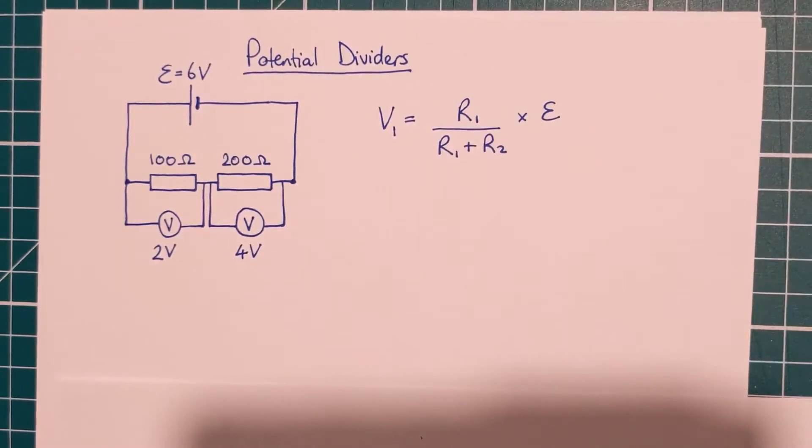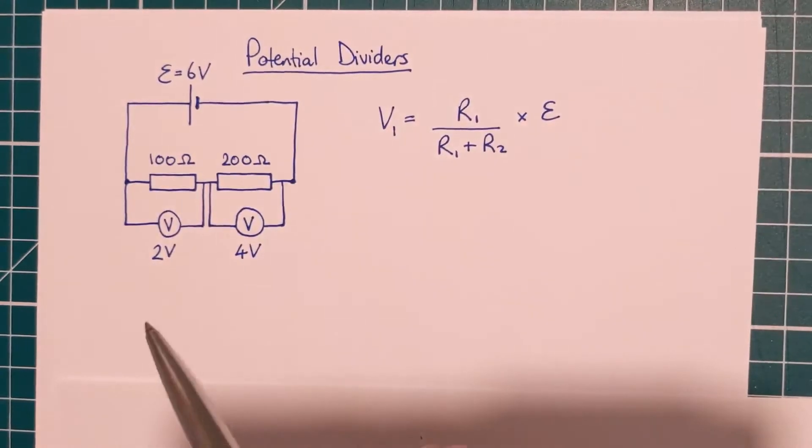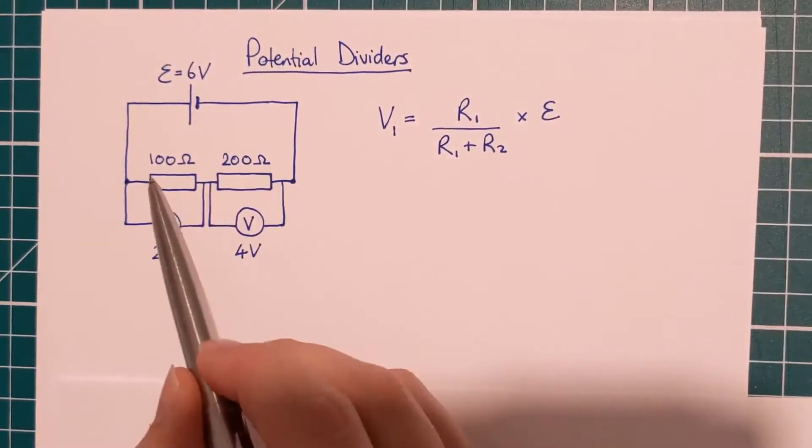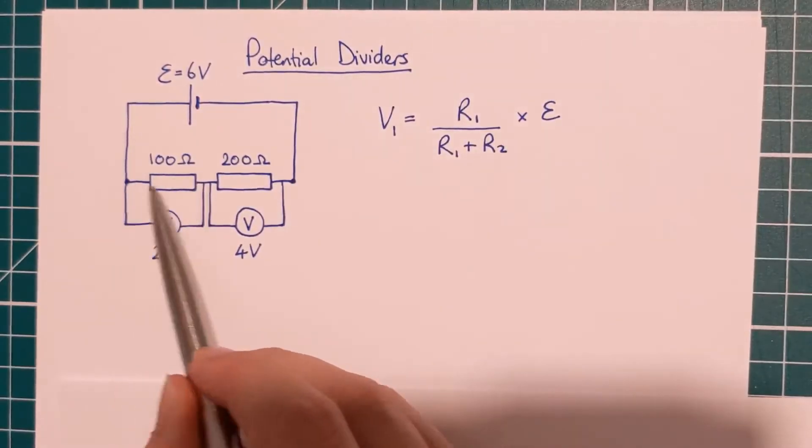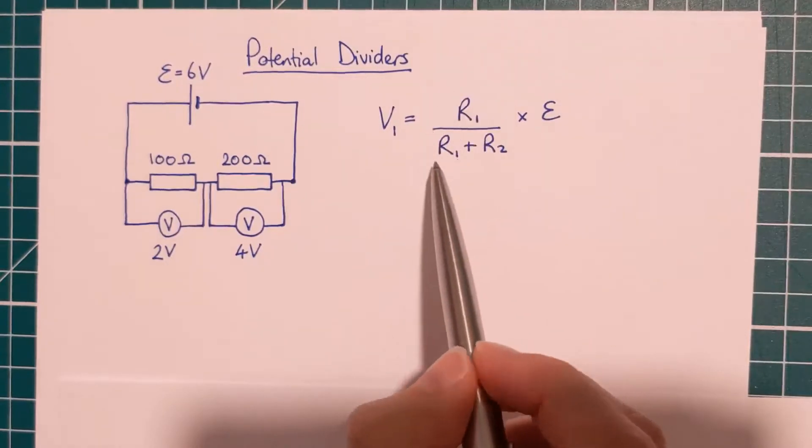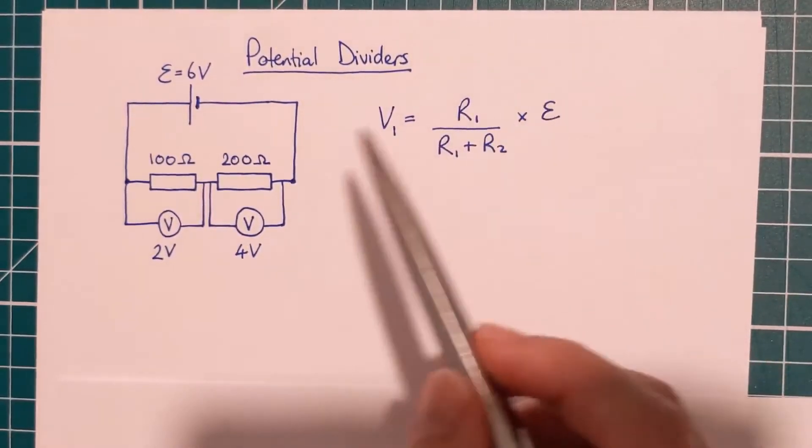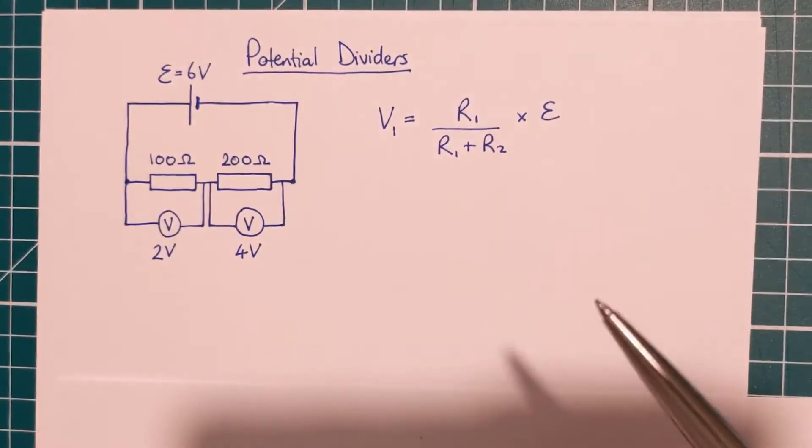It's useful to have a formula for when the numbers are not quite so friendly and this is it. What this is saying is that the 100 ohms is a third of the total resistance. So 100 ohms out of 300 ohms, that's the fraction it is of the total resistance and so it takes that fraction of the total available voltage as well.